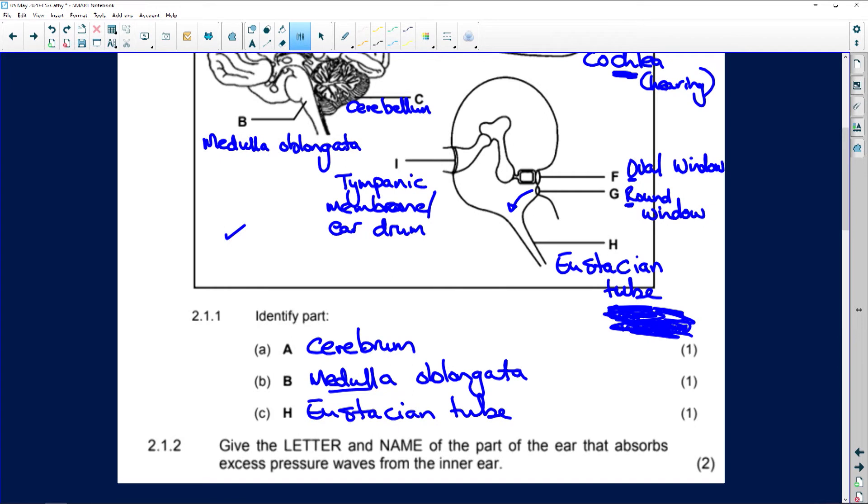And H is the eustachian tube. And the eustachian tube's job is to equalize the pressure from the middle ear and the outer ear. Because if that pressure here isn't the same as the pressure here, it's going to damage this eardrum or tympanic membrane. And we don't want that.